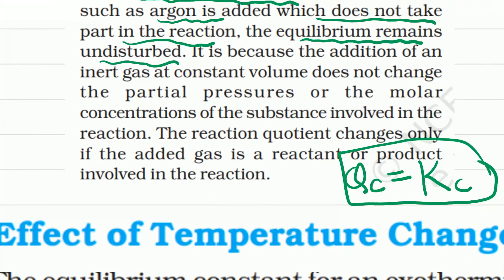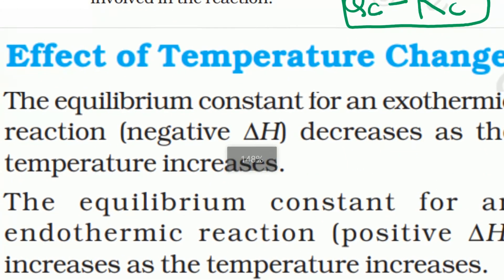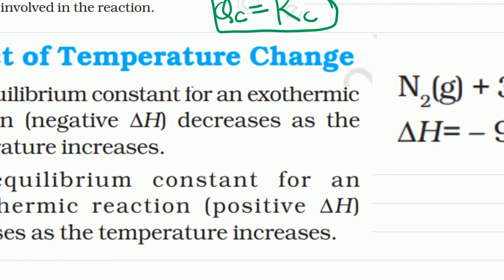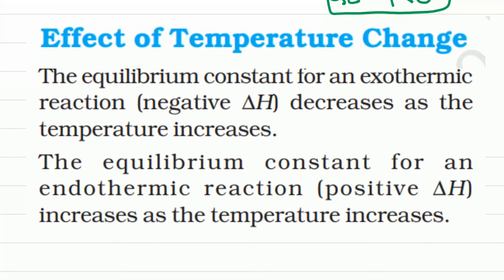Now we discuss the effect of temperature change. To study temperature change, we need to consider delta H. When temperature increases, in which direction will the reaction proceed? When temperature decreases, in which direction will it proceed? This depends on delta H — whether the reaction is exothermic or endothermic. If a reaction is exothermic (energy is released) at equilibrium and we want better yield, we should decrease temperature to make the forward direction proceed toward the product side.